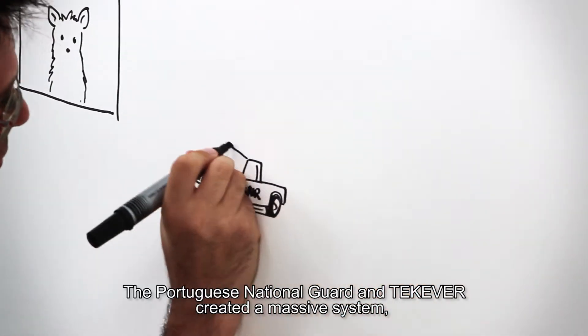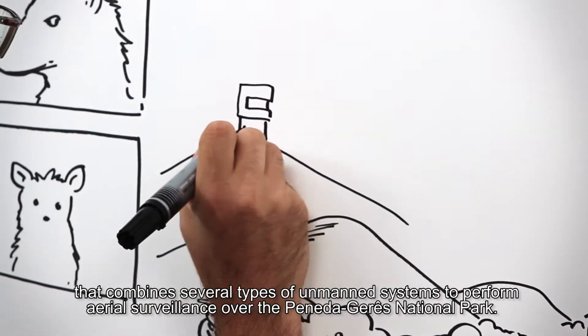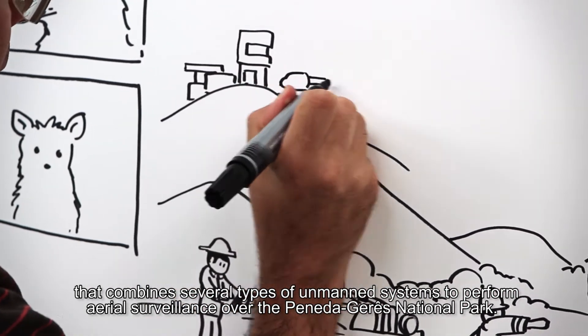Portuguese National Guard and Tekever created a massive system that combines several types of unmanned systems to perform aerial surveillance over the Peneda-Gerês National Park.